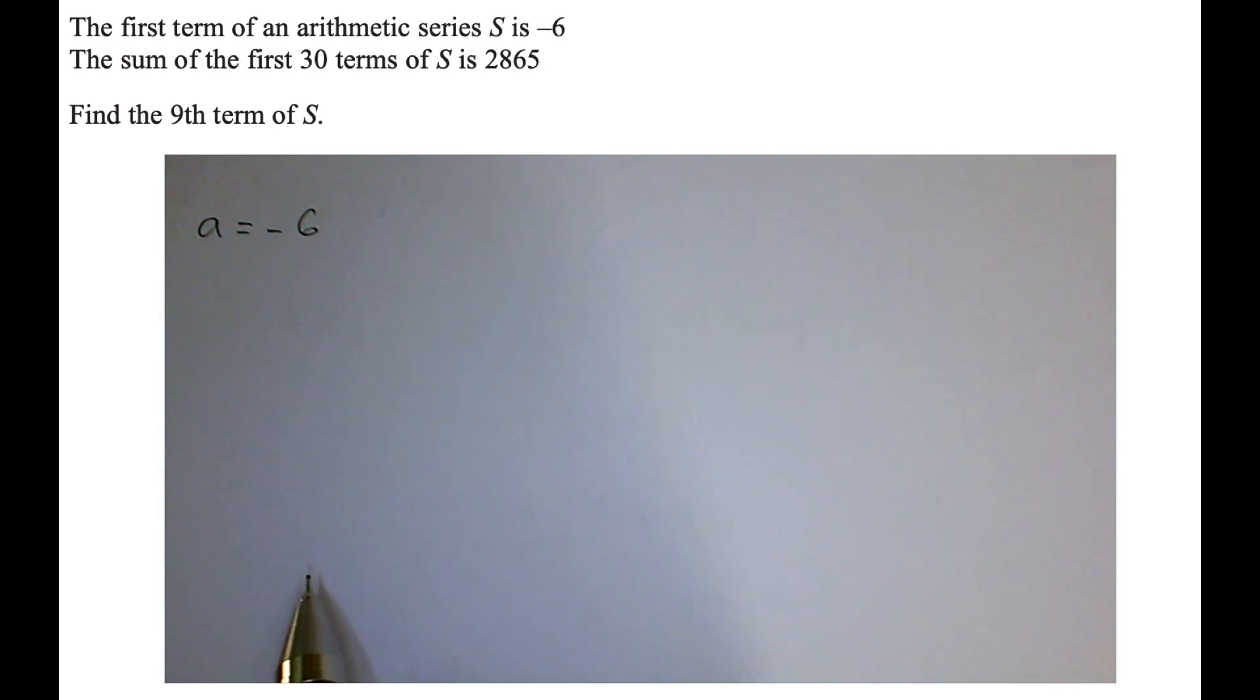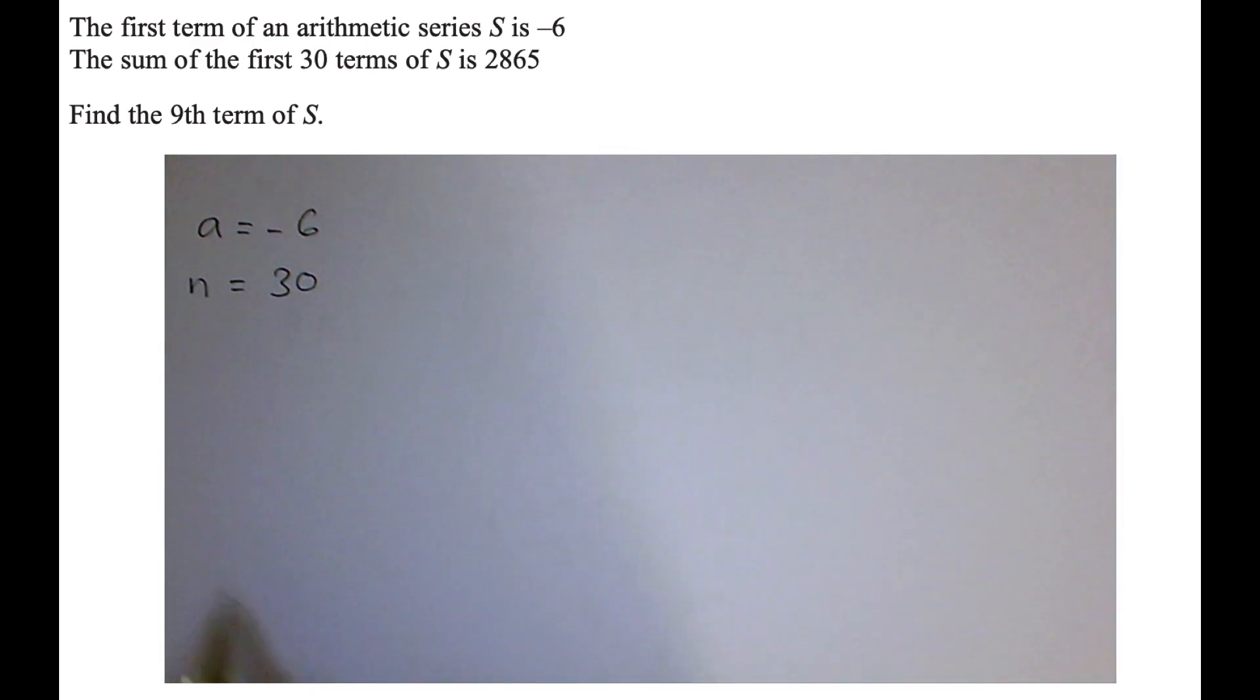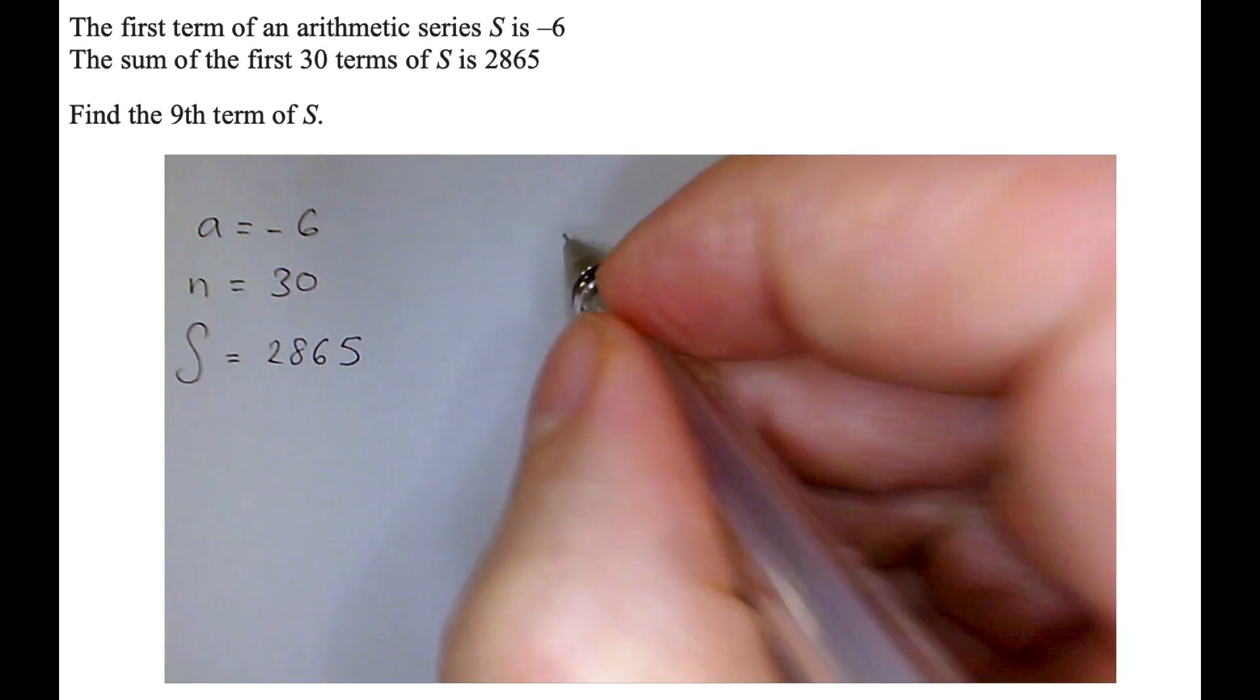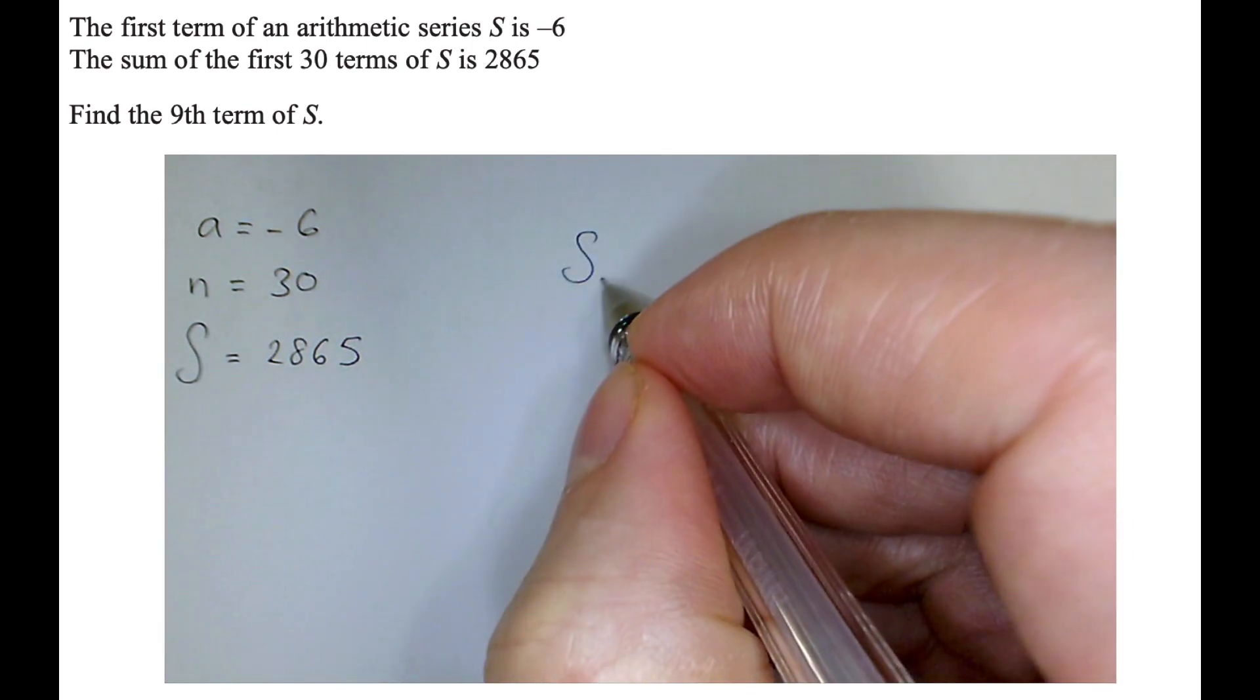So the sum of the first four terms, which I'm going to write as S4... Oh sorry, I'm doing the question now, not my example. So in this question, we've been told that the first term is minus 6, that there are 30 terms, and that if I add them all together, they add up to 2,865.